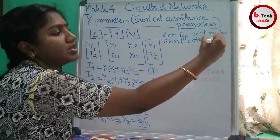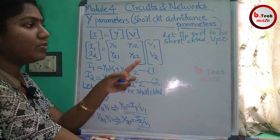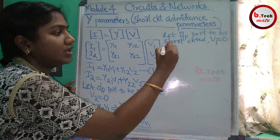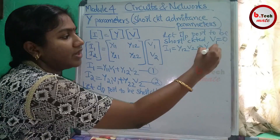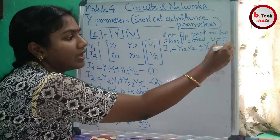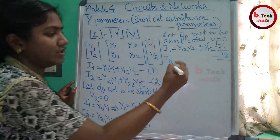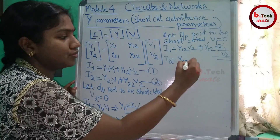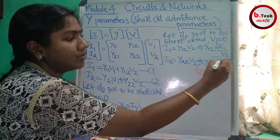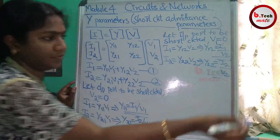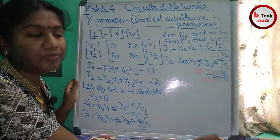Now let the input port be short circuit, so V1 equals 0. Substituting into the equations: I1 equals Y12·V2, so Y12 equals I1 by V2. And I2 equals Y22·V2, so Y22 equals I2 by V2. With the input port short circuit, we get two parameters: Y12 and Y22.